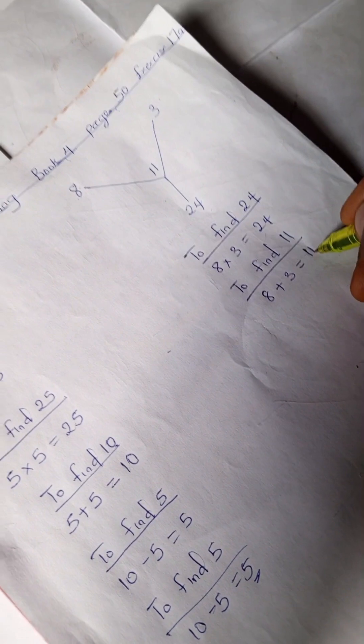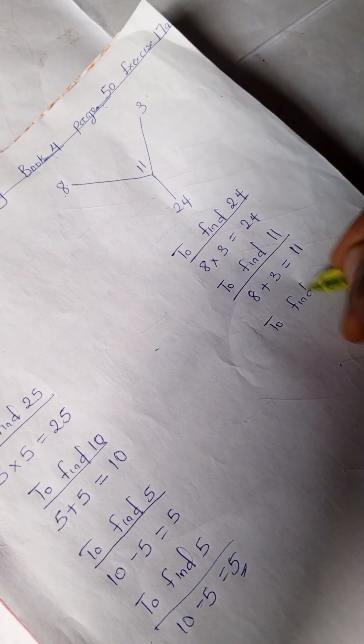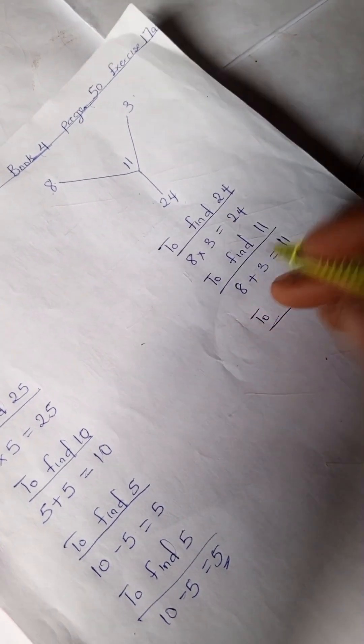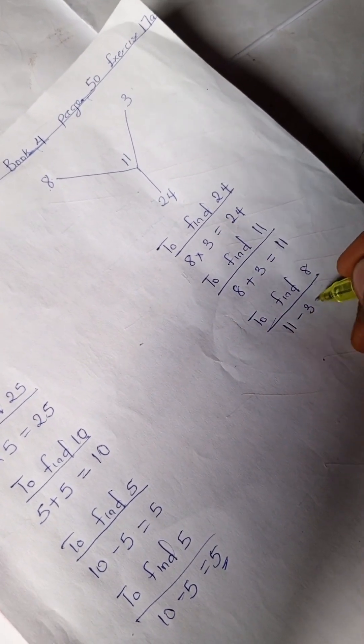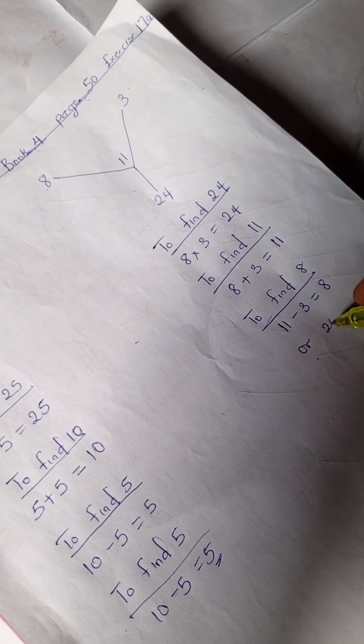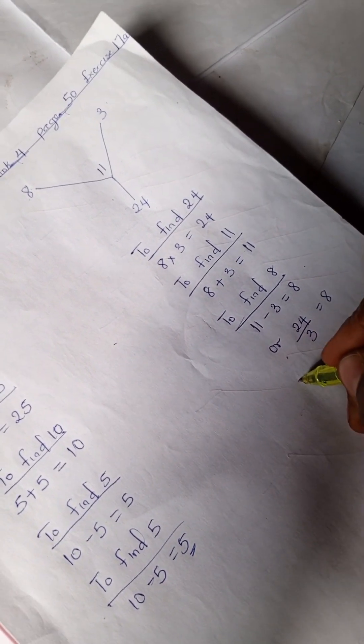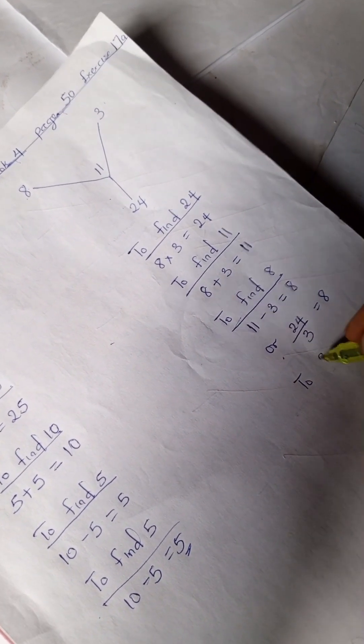To find 8, we can either have our 11 minus 3 as 8, or we have our 24 divided by 3 as 8.